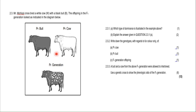I did give this to you as homework, so I'm going to go through the answers — but you can stop me and pop a question in the chat if you want me to explain. Question 2.3.1 asks: which type of dominance is illustrated in the example above? You've learned three types of dominance. Complete dominance is when the trait completely masks the other — for example, brown eyes is dominant over blue eyes.